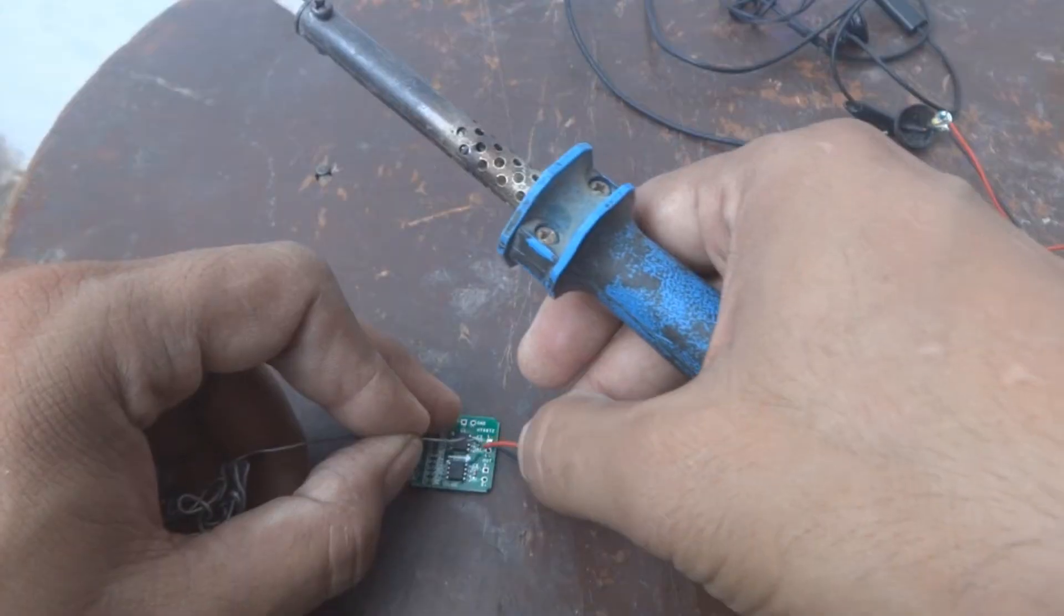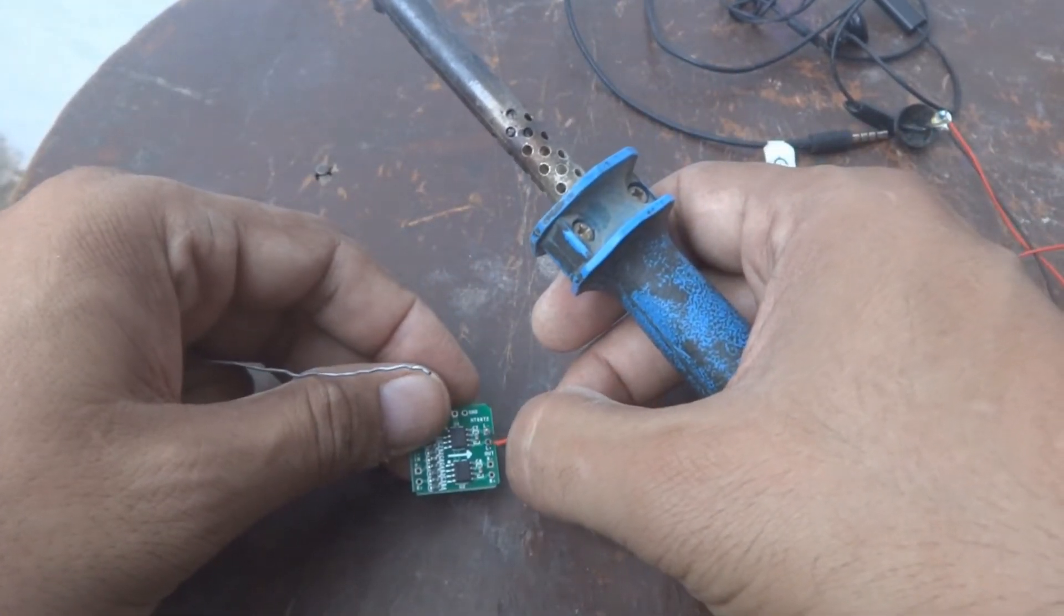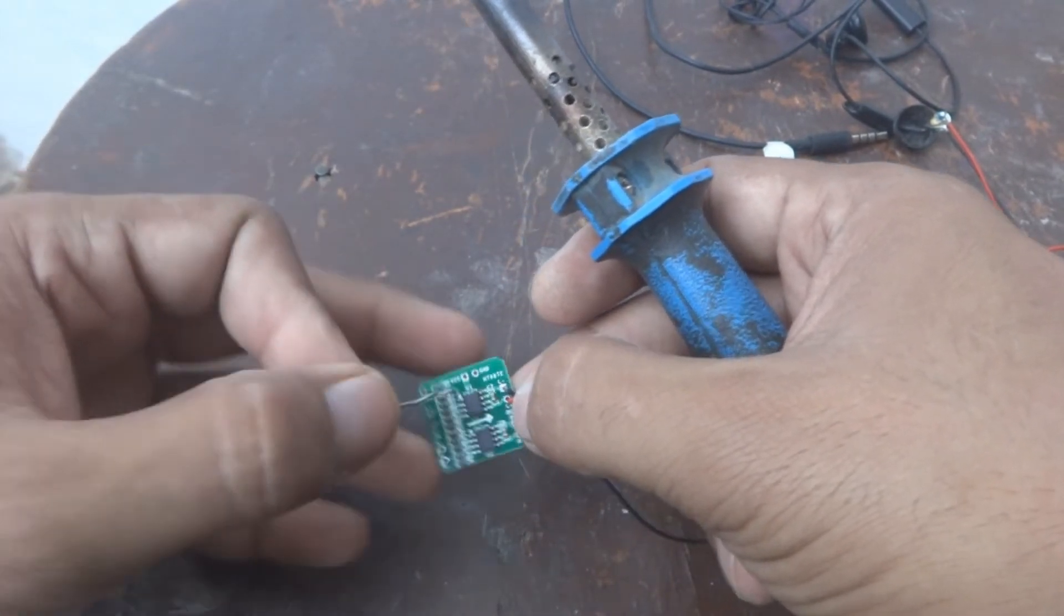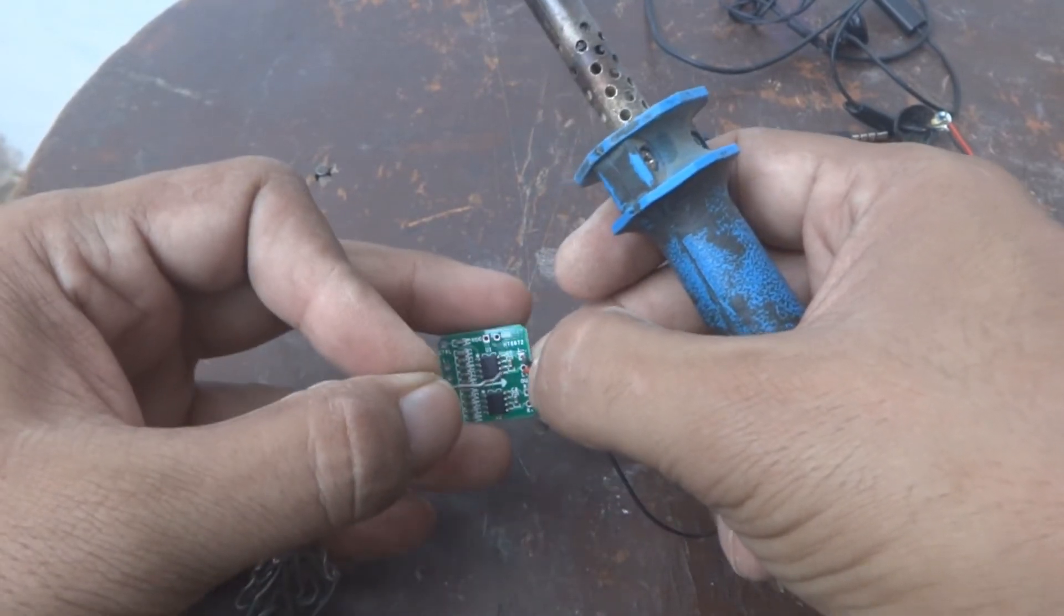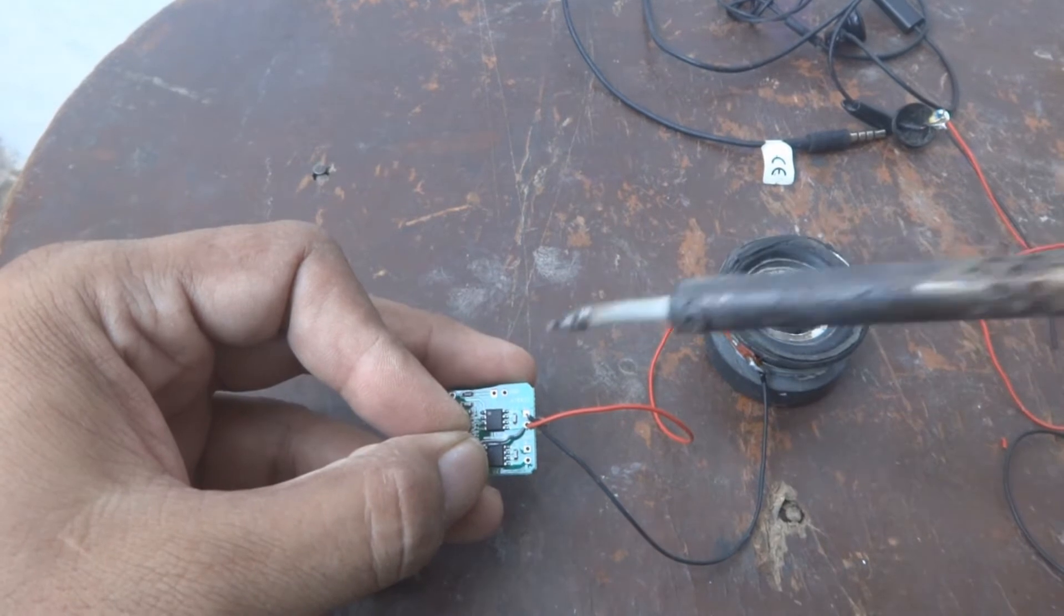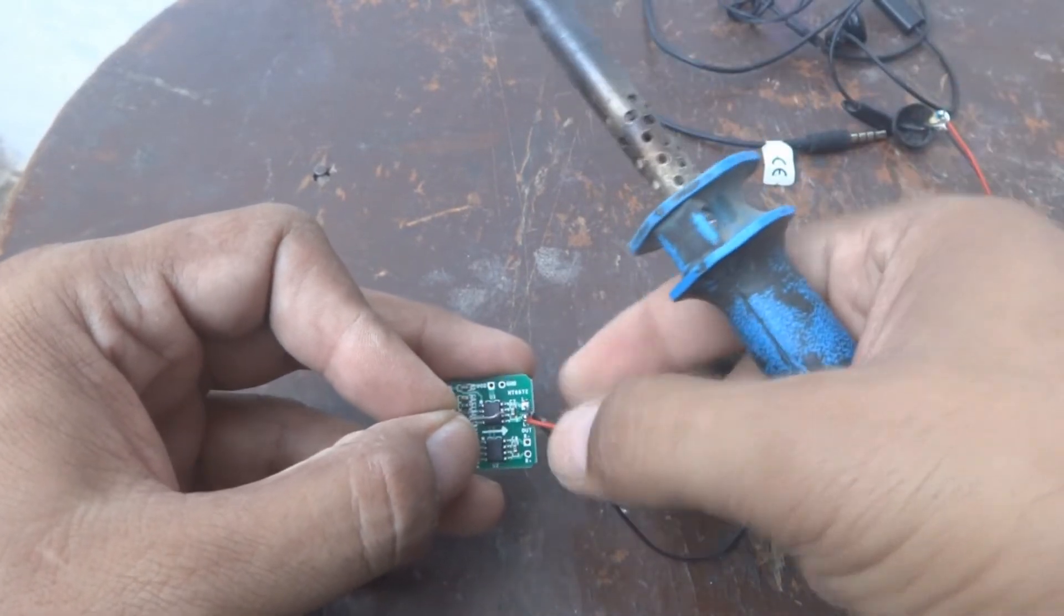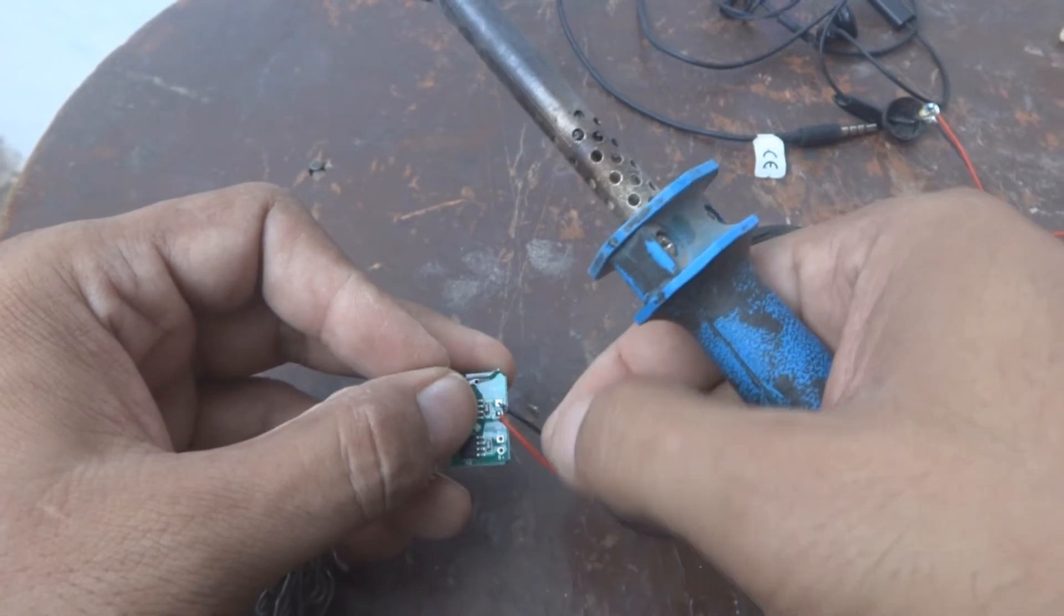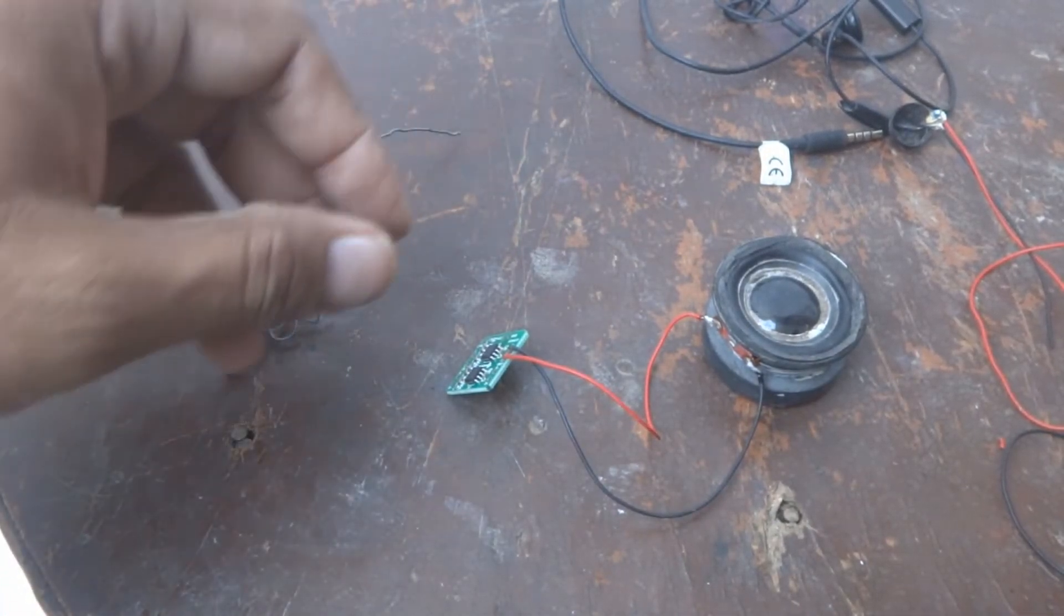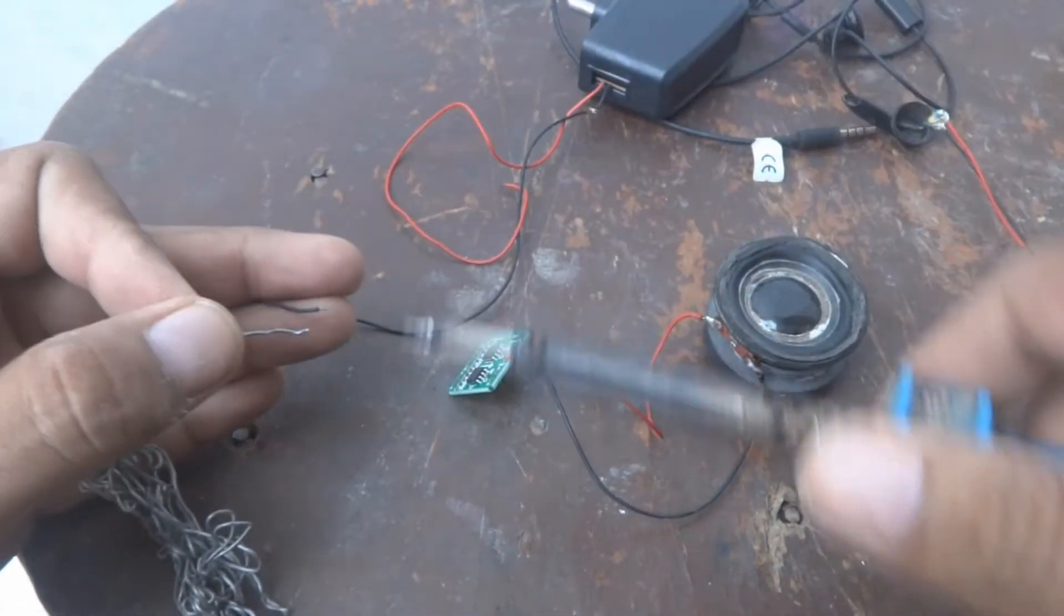I blew on the soldering iron because it was getting some carbon. This should not be short-circuited. Now for the power supply, I'll use this small tiny power supply and wire the positive and negative.